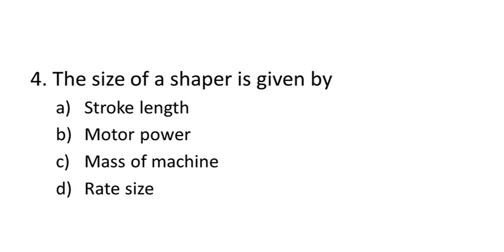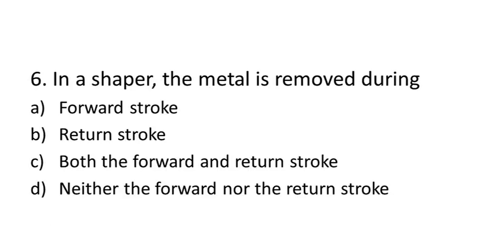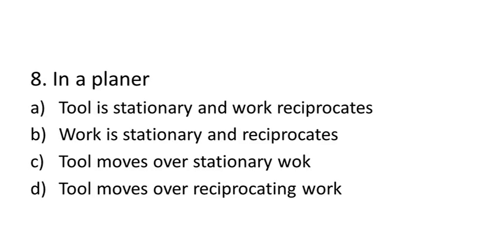Question four: the size of a shaper is given by stroke length. Question five: gears can be best produced on mass production using hopping — hopping is the answer. Question six: in a shaper the metal is removed during the forward stroke. Question seven: gears can be cut on a shaper — yes, they can.